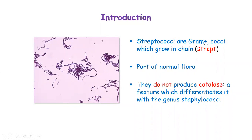The name is Streptococcus — 'Strept' meaning it has a chain-like structure, and as you can see here it's like a chain of bacteria put together. The bacteria is round-shaped, which is 'cocci,' and that is why we call it Streptococcus.